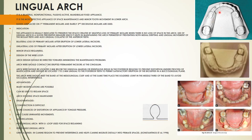When lateral incisors have erupted, central incisors and permanent molars have also erupted, so bands are placed on the first permanent molar. Lingual arch can also be used after unilateral loss of the primary molar following eruption of the lower lateral incisor, as long as the anteriors have erupted. It can also be used for minor space regaining.